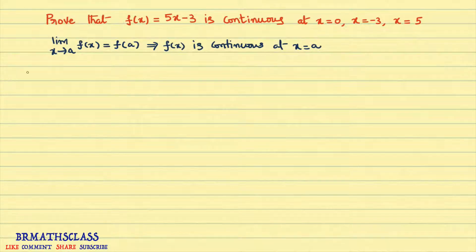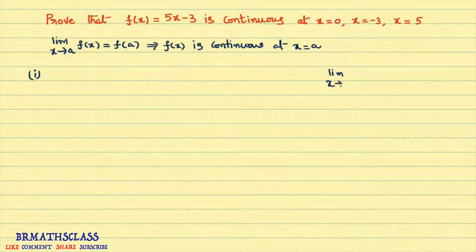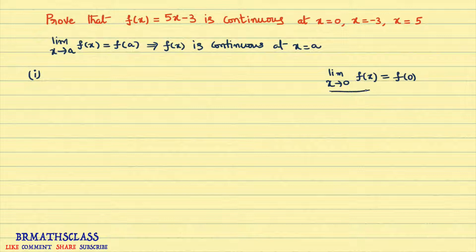The first part: we need to show that the function is continuous at x = 0. When we say the function is continuous at x = 0, we check that limit as x tends to 0 of f(x) equals f(0). I'll calculate the limit first, then f(0). If both are the same, then the function is continuous at x = 0.